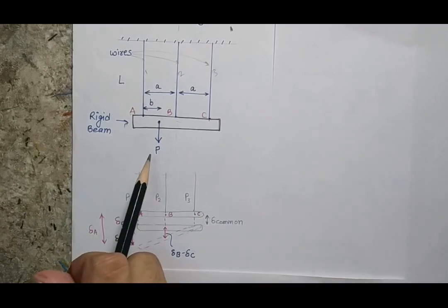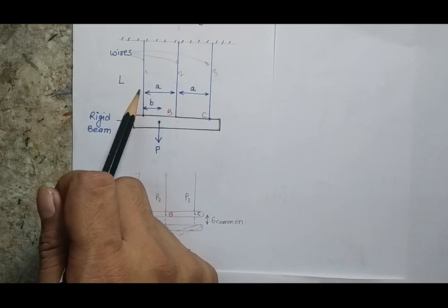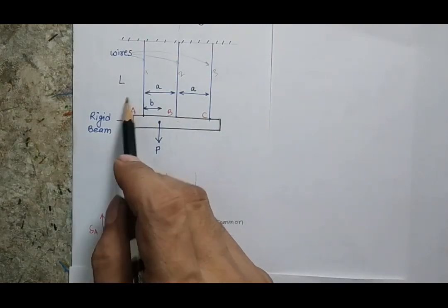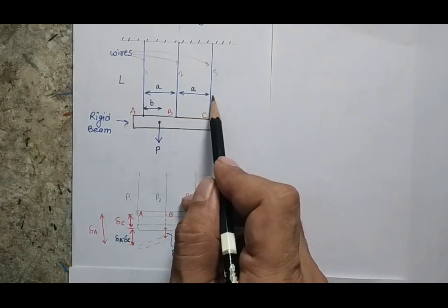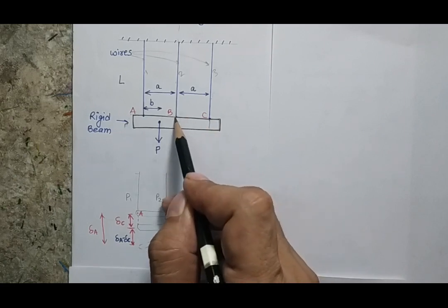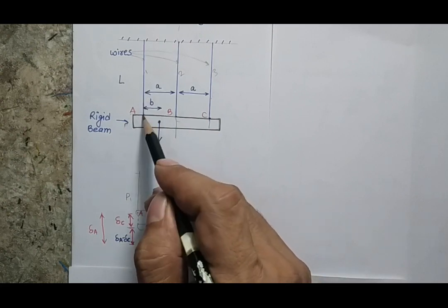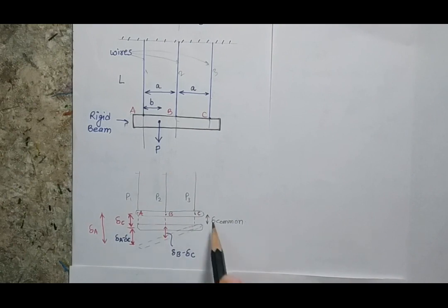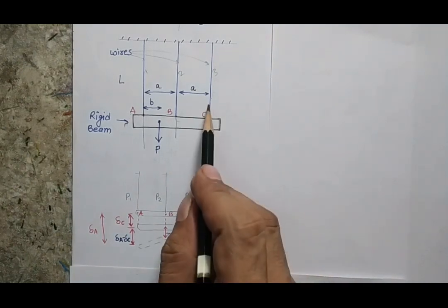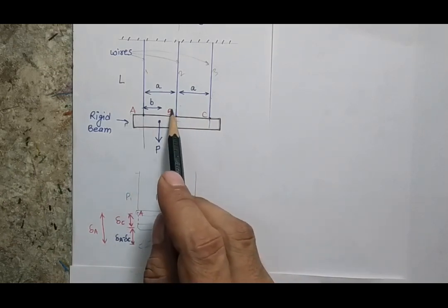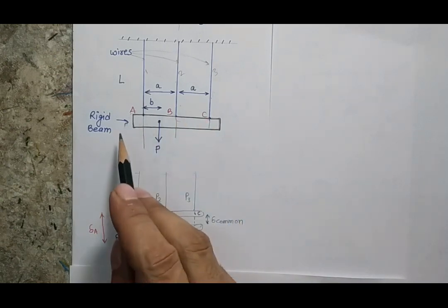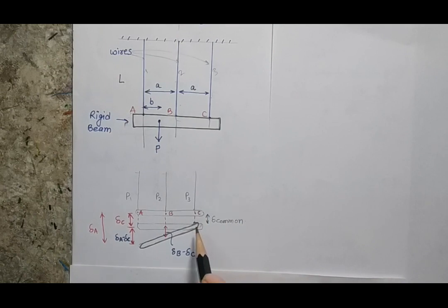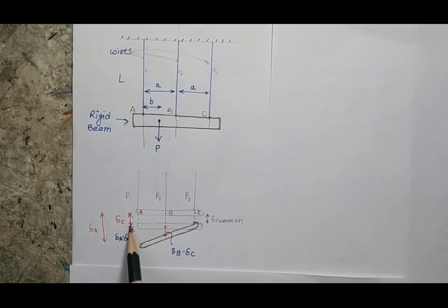Suppose I apply a force of 100 and because of that the first wire carries 50, the second carries 30, and the third carries 20. The least force is in the third wire and the highest in the first. Because the deformations in the three wires are not equal, the rigid bar will not remain horizontal — it will reach a final inclined position, forming some angle with the horizontal. This is the final position of the bar after load application.